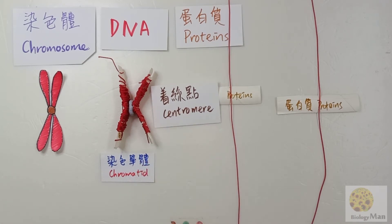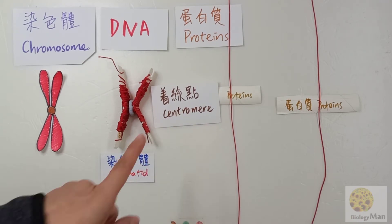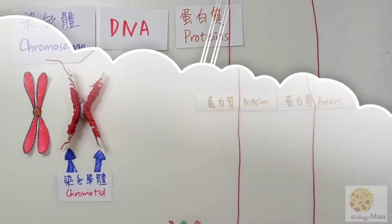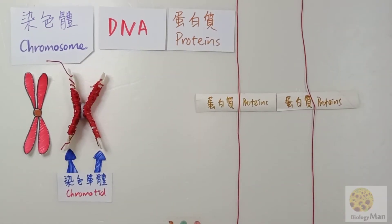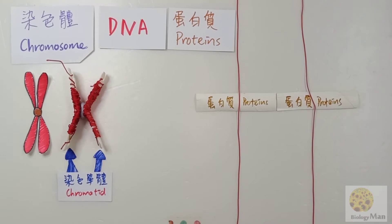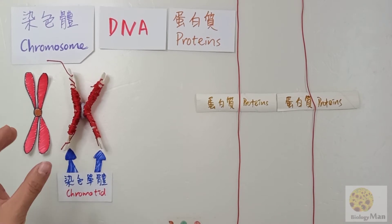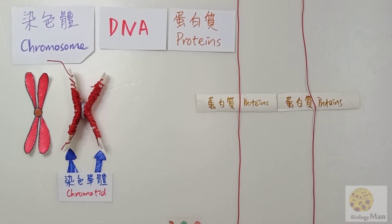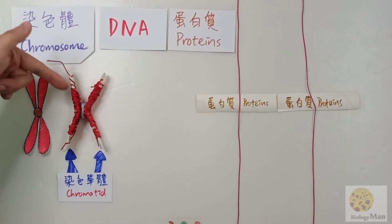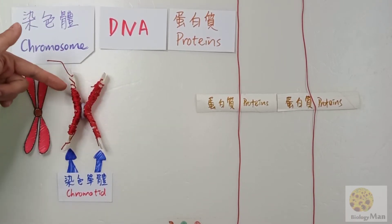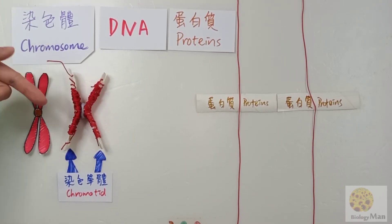The position where the two DNA strands attach to each other, we call it the centromere. In Chapter 11 on cell division you will see this word again. So up to this point, you know the chromosome is formed by two chromatids, and the two chromatids join together at a point called the centromere.